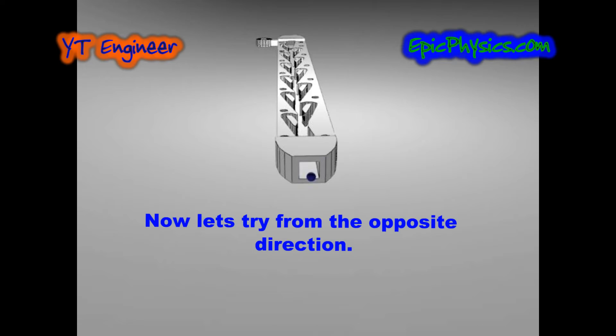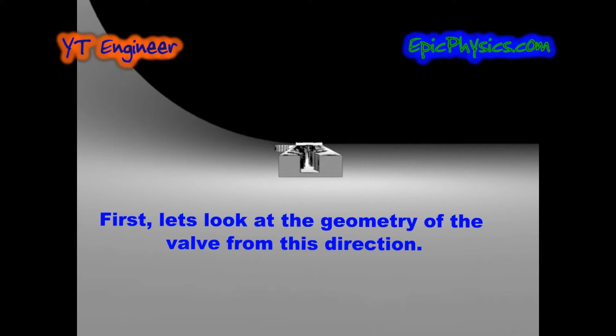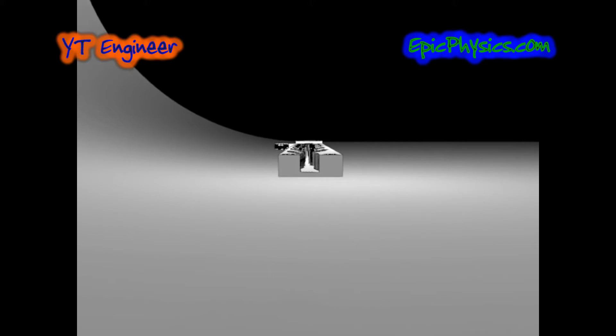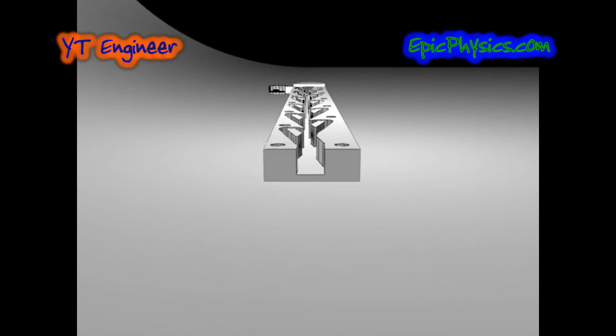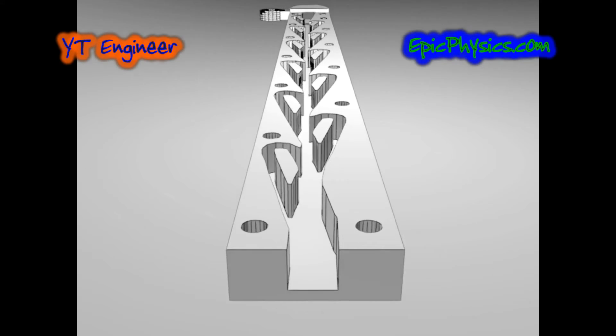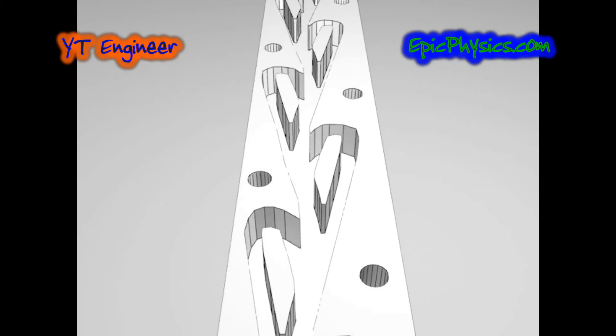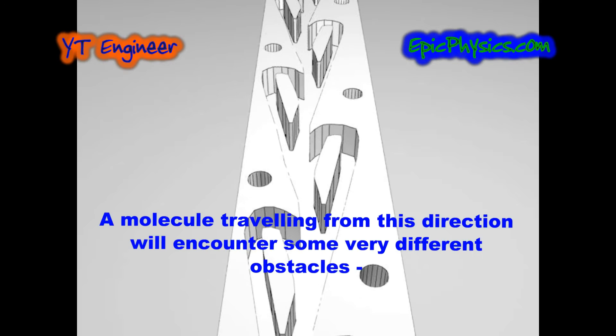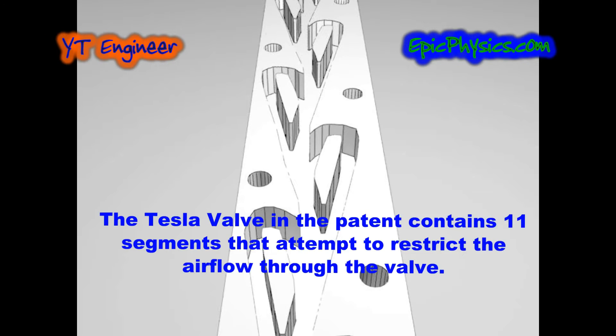Now let's try from the opposite direction. First, let's look at the geometry of the valve from this direction. A molecule traveling from this direction will encounter some very different obstacles. The Tesla valve in this patent contains 11 segments that attempt to restrict airflow through the valve.